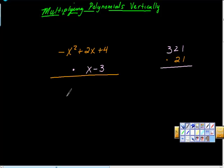I want to work on multiplying polynomials vertically. Usually, if we have two polynomials and we're going to multiply them, if they're binomials, then we use FOIL, don't we?